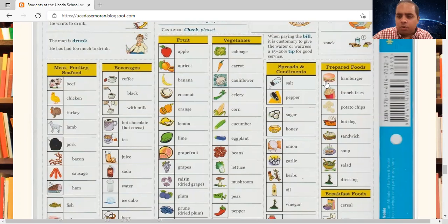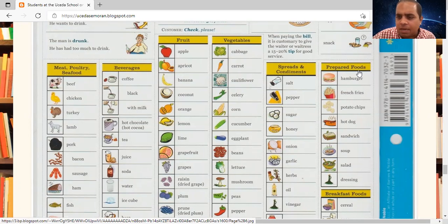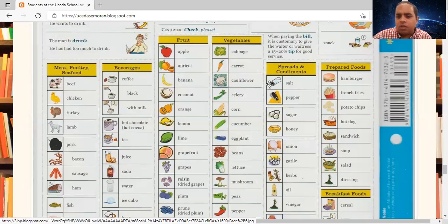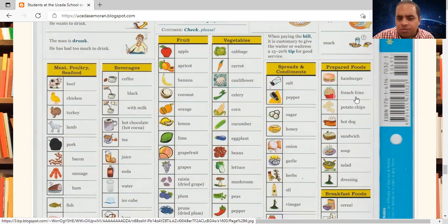Please say with me prepared foods. Prepared foods are the same as junk food or fattening foods. Hamburger. French fries. Potato chips. Hot dog. Sandwich. Soup. Salad. Dressing.